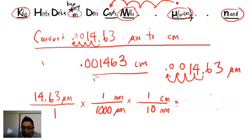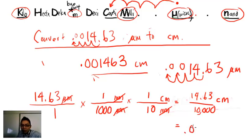Check that out - if I do this, the micrometers should cancel out, the millimeters should cancel out, and I should be left with centimeters at the top. Go across: 14.63 times one times one is just 14.63. At the bottom, one times a thousand is a thousand, times ten is ten thousand. That's my calculation: 14.63 divided by ten thousand, and I end up with the same thing: 0.001463 centimeters.